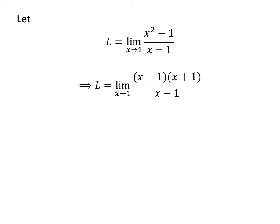x squared minus 1 can be factorized as x minus 1 times x plus 1, so L is the limit of x minus 1 times x plus 1 upon x minus 1 as x approaches 1.